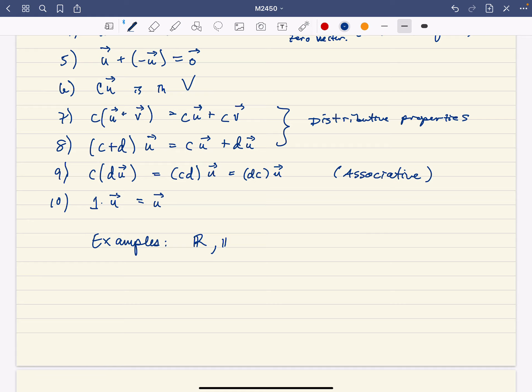We know that R² is a vector space, because that's kind of what we based everything off of. In general, Rⁿ is a vector space, where this is the set of n-tuples, where each coordinate comes from R. So those are all examples of vector spaces, and that's totally fine.